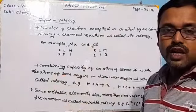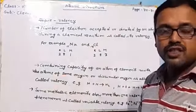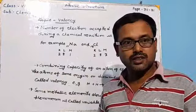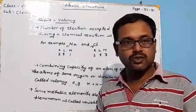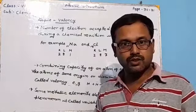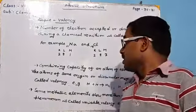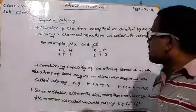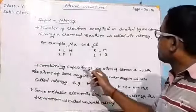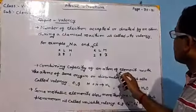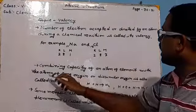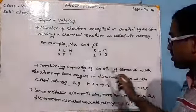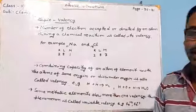So we can define valency as the number of electrons accepted or donated by an atom during a chemical reaction, because during chemical combinations atoms either accept or donate electrons to fulfill their octet or duplet, achieve stability, and form their respective molecules. We can also define valency as the combining capacity of an atom of an element with atoms of the same or dissimilar origin.